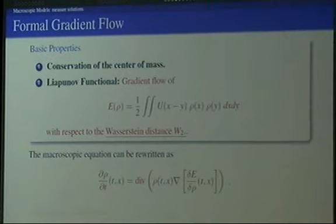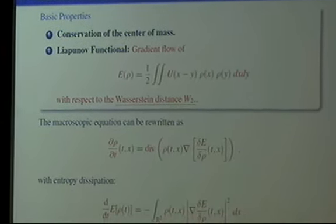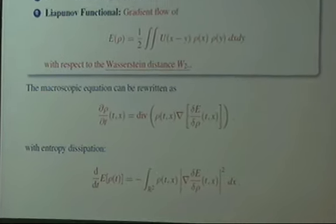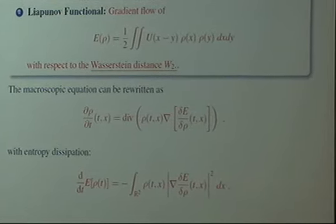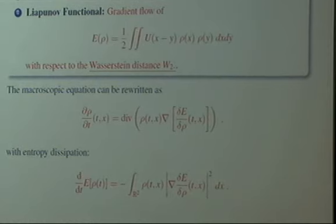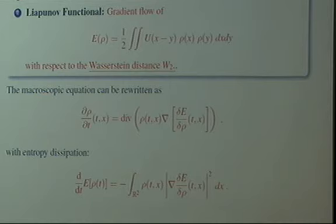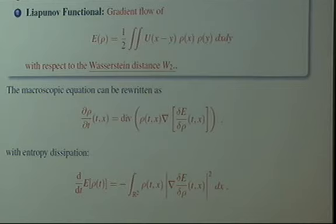When U is smooth — at least C¹, or better C² — you can formally see that the continuity equation has the structure of a gradient flow. The velocity field is minus the gradient of the variational derivative of the total potential energy functional with respect to ρ. If you take the total potential energy, compute its formal variational derivative, you see the continuity equation has this structure. Formally, the derivative in time of the energy gives dissipation — you substitute dρ/dt, integrate by parts, and at least formally you have entropy dissipation. This is the right Lyapunov functional for the distribution.